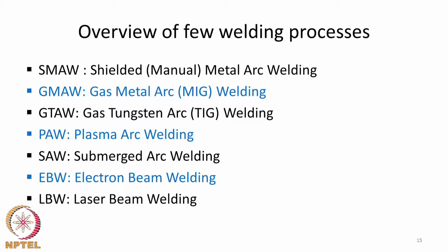There are several welding processes we will look at for an overview in this first lecture. Though not a comprehensive list, the processes covered include shielded metal arc welding, gas metal arc welding, gas tungsten arc welding, plasma arc welding, submerged arc welding, electron beam welding, and laser beam welding — representing a broad set of processes important in industry.